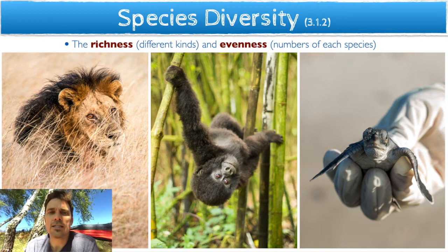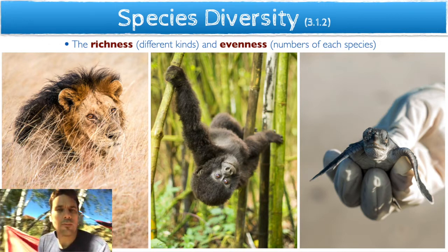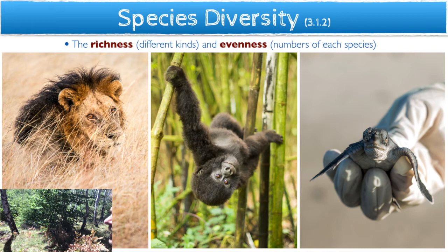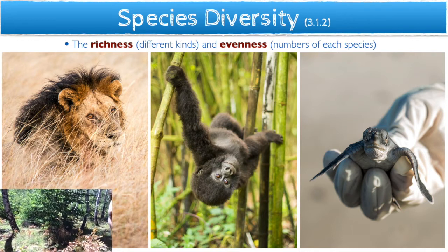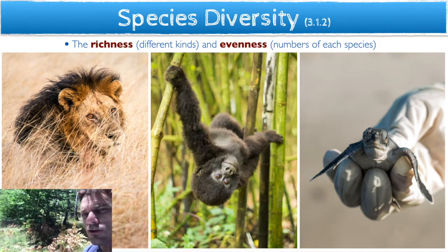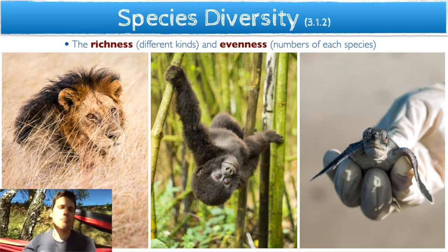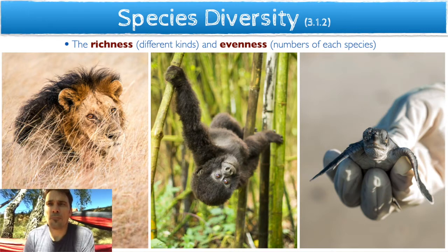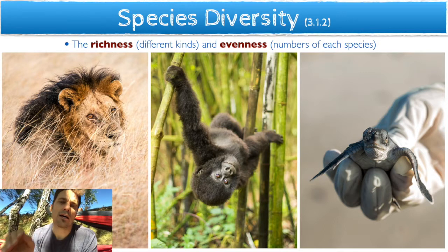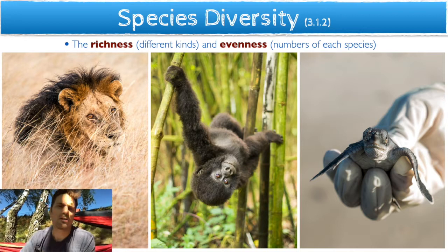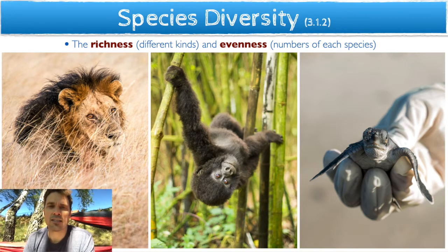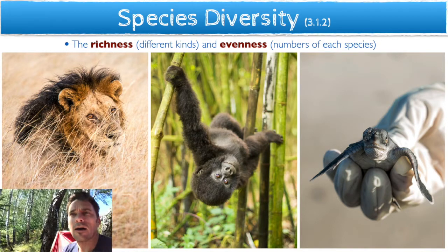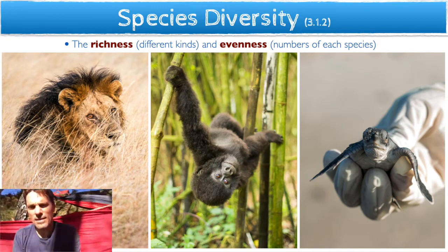Species diversity looks at the richness and evenness of species. Here in a windy forest, I can look at richness — how many different kinds of trees — and how many of each kind I see. Many different species is a good sign of diversity, but it's not the only sign. If I have a lot of each different kind, that's extremely diverse. But if I just have one rare species and mostly the same tree all around, that's not as diverse.